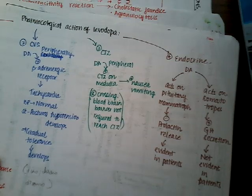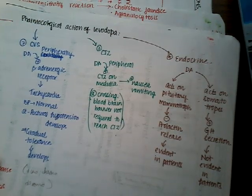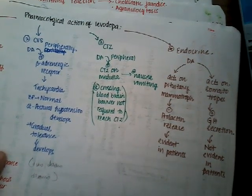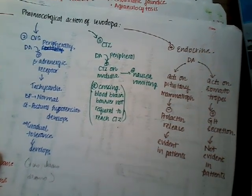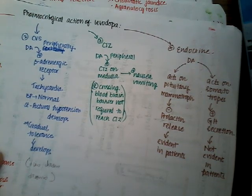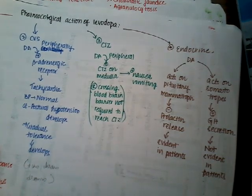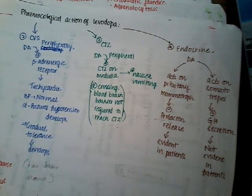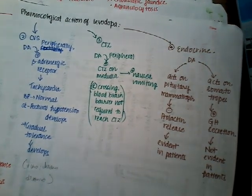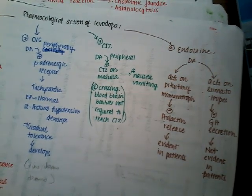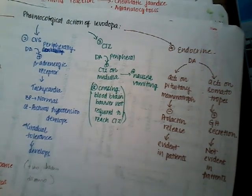Endocrinologically, dopamine activates pituitary mammotropes and thus inhibits prolactin release. It also acts on somatotropes and activates growth hormone secretion, though this is not much seen in adult patients. Inhibition of prolactin release is the main endocrine effect observed.